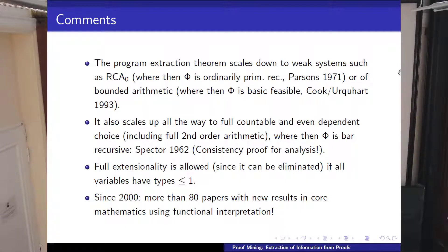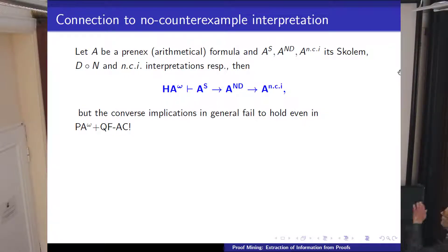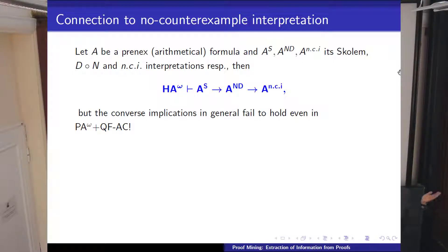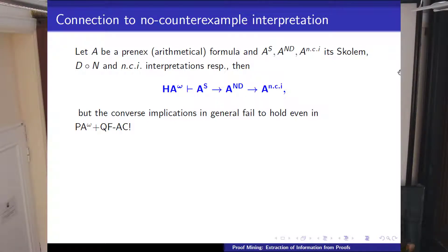Let's revisit things from the first lecture. We saw that if you have a statement like a Cauchy statement—monotone convergence of monotone bounded sequences—that's a for-all-exist-for-all statement. To ask for the Skolem normal form to have a computable witness is too strong, because it doesn't have one in general—take a Specker sequence, it will not have one. To go to the Herbrand normal form and ask for a no-counterexample interpretation is very weak, so weak that you can solve it, but it might not contain the correct computational content of the original statement.